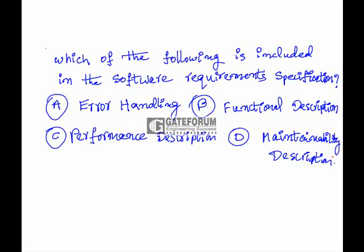The following is included in the software requirements specification. Four options were given: option A, error handling; option B, functional description; option C, performance description; option D, maintainability description. The question asks which of these is included in the SRS.